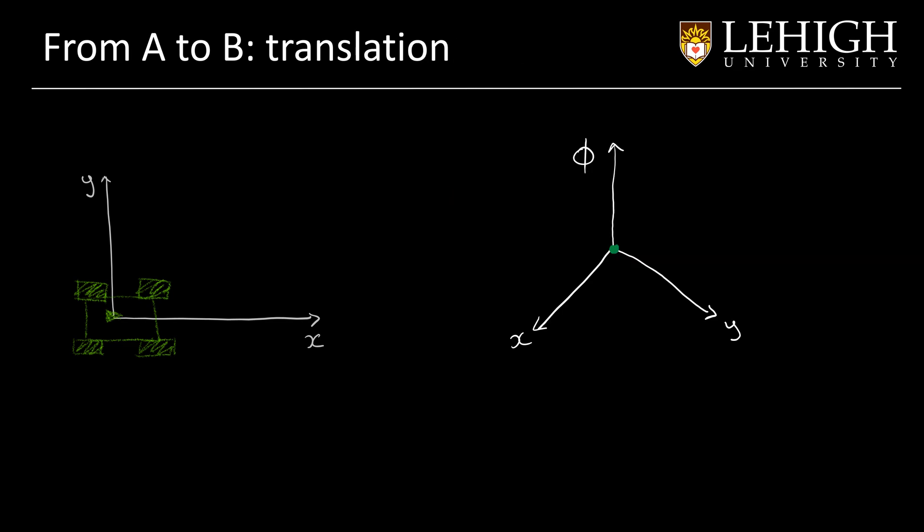Now this is time to move the car. We are in the configuration theta A and we want to move to the configuration theta B. And we want to follow a linear line straight path.